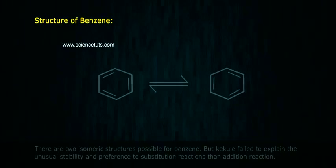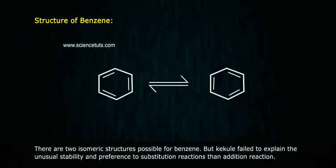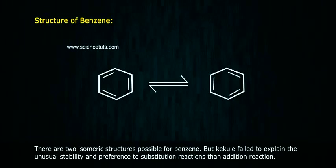There are two isomeric structures possible for benzene, but Kekulé failed to explain the unusual stability of benzene and its preference for substitution reactions over addition reactions.